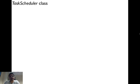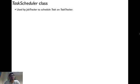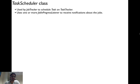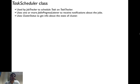Until now we discussed how a job is submitted; now we will discuss how a task is scheduled. For scheduling a task, you use an abstract task scheduler class. This class is used by JobTracker to schedule tasks on TaskTracker. It uses one or more JobInProgressListeners to receive notifications about jobs, and also uses the ClusterStatus class to get information about the state of the cluster.